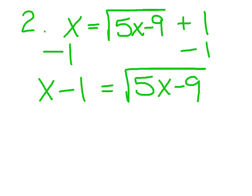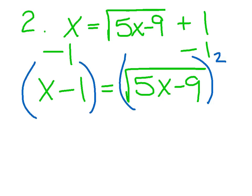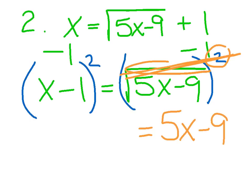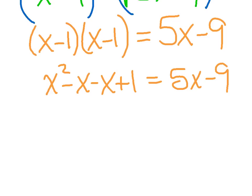Step 2 is to get rid of the radical by raising both sides to a power. Again, this is called a square root, so we are going to square both sides — make sure you wrap both sides in parentheses. The square and square root cancel each other out, so on this side we have 5x minus 9. On this side, I'm squaring a binomial, which means write it twice and FOIL. So I've got x squared minus x minus x plus 1, giving me x squared minus 2x plus 1 equals 5x minus 9.